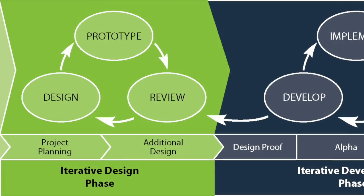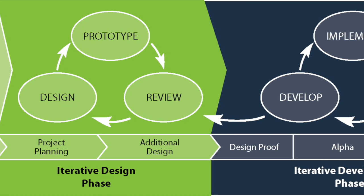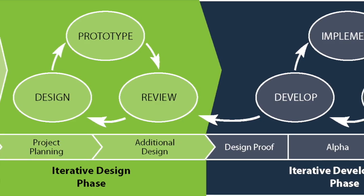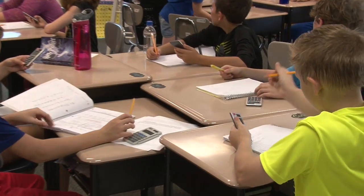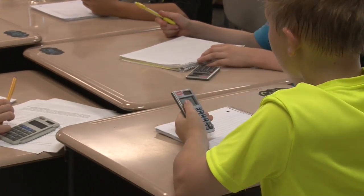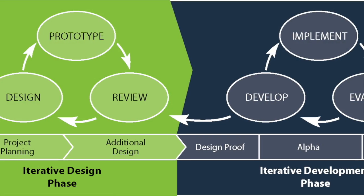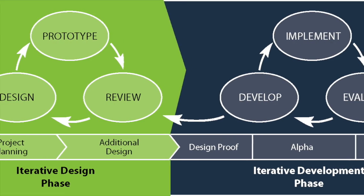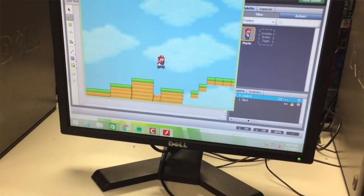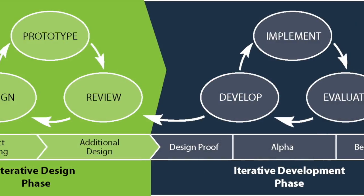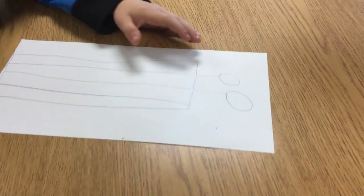The biggest difference between SAM1 and SAM2 is that SAM2 implements something known as iterative design. After the preparation phase, students begin the iterative process, which has two parts: the iterative design phase and the iterative development phase. Think of the iterative design phase as the rough draft — students are working on a prototype. When the creators of Super Mario built the first game, they didn't build the entire game at first; they built a prototype level to work out the mechanics of the game first. Same idea.